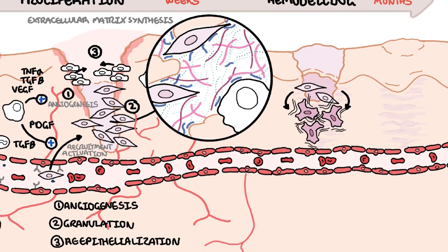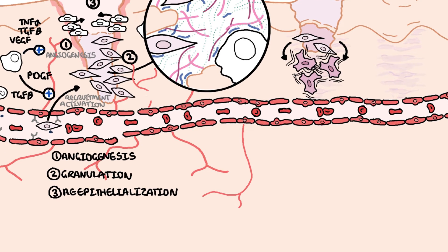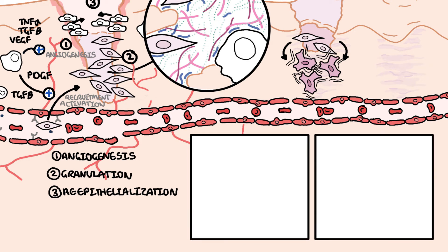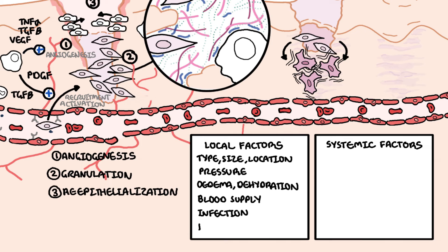There are many factors that can lead to impaired healing, and these factors can be divided into local factors or systemic factors. Local factors include the wound type, wound size and location, whether there is pressure on the wound, edema or dehydration, the blood supply to the wound, and if there is an underlying infection or foreign material.